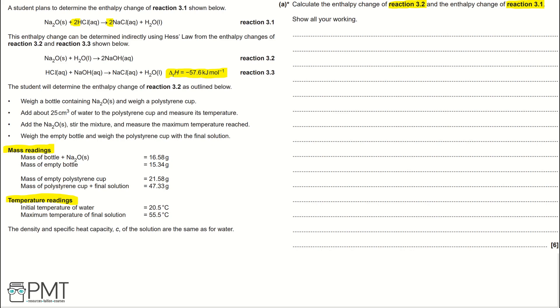The student will determine the enthalpy change of reaction 3.2 as outlined below. Weigh a bottle containing Na₂O solid and weigh a polystyrene cup. Add about 25 cm³ of water to the polystyrene cup and measure its temperature. Add the Na₂O solid, stir the mixture and measure the maximum temperature reached. Weigh the empty bottle and weigh the polystyrene cup with the final solution. We are given the mass readings and temperature readings, and told that the density and specific heat capacity C of the solution are the same as for water.